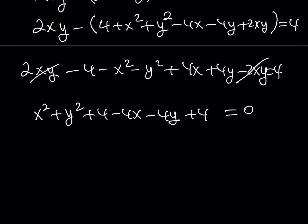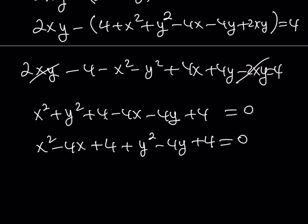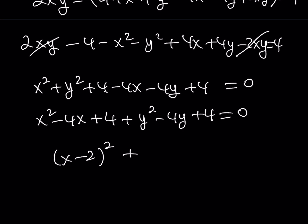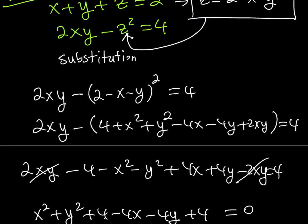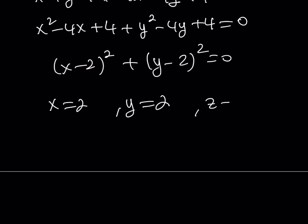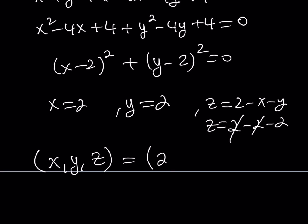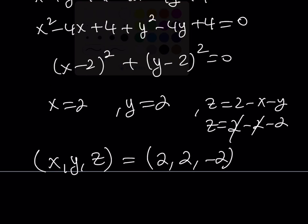Rearranging, we can group terms: (x squared minus 4x plus 4) plus (y squared minus 4y plus 4) equals 0, which factors as (x minus 2) squared plus (y minus 2) squared equals 0. A sum of squares can only equal 0 if each term is 0, so x equals 2 and y equals 2. Since z equals 2 minus x minus y, that gives z equals 2 minus 2 minus 2 equals negative 2. We get the same ordered triple: (2, 2, negative 2).